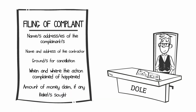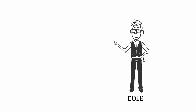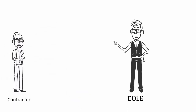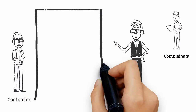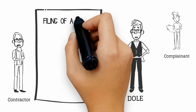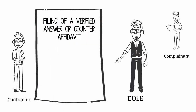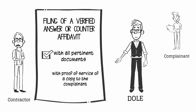The complaint should also state the relief sought. To cancel the registration of an erring contractor, due process must be strictly observed. Upon receipt of the complaint, the DOLE Regional Director shall direct the contractor, with notice to the complainant, to file a verified answer or counter-affidavit within 10 calendar days, incorporating all pertinent documents with proof of service of a copy to the complainant.